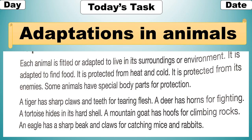Animals are adapted to find food, to be protected from heat and cold, and to be protected from their enemies. Some animals have special body parts for protection. A tiger has sharp claws and teeth for tearing flesh. A deer has horns for fighting. A tortoise hides in its hard shell. A mountain goat has hooves for climbing rocks. An eagle has a sharp beak and claws for catching mice and rabbits.